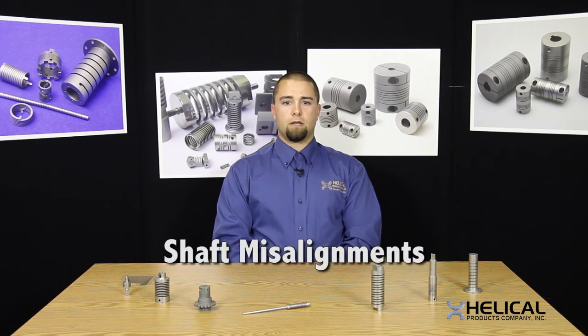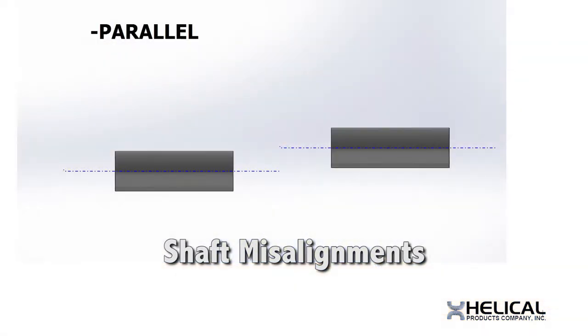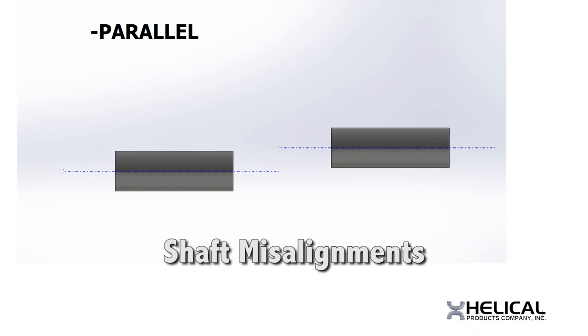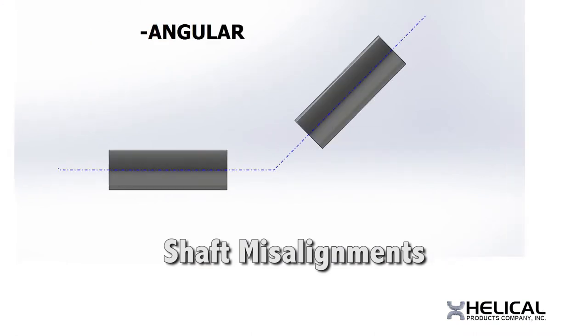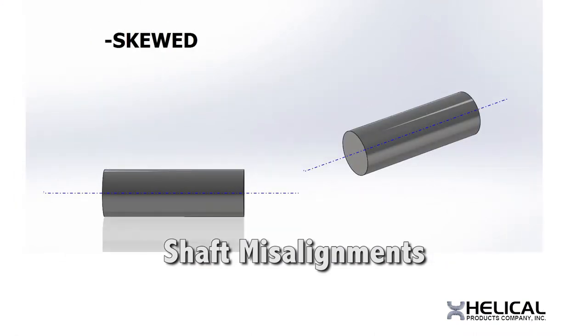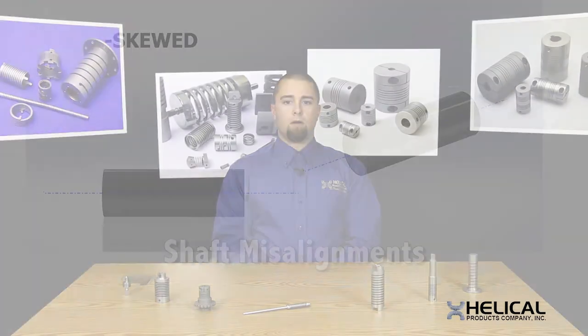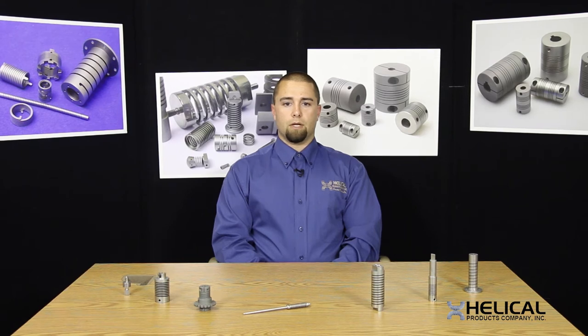The first consideration in choosing a coupling is shaft misalignments. Here are some illustrations of three types: parallel offset, angular offset, and skewed. We can design to compensate for any combination of these offsets, though minimizing will promote lower stresses and help ensure a better service life of the coupling.